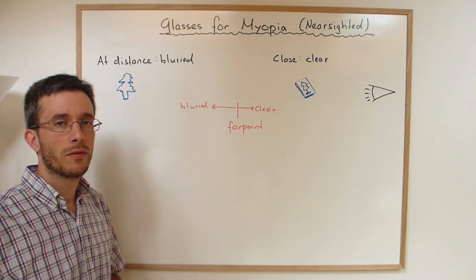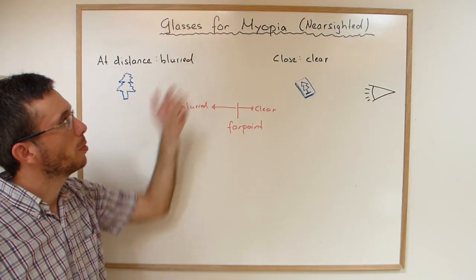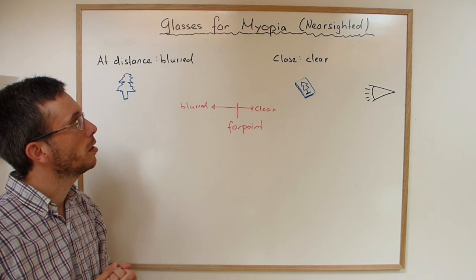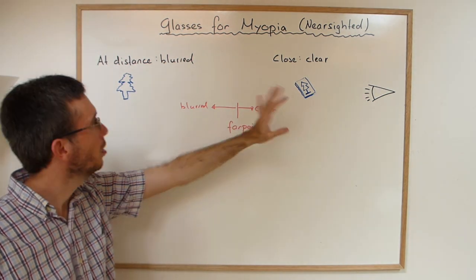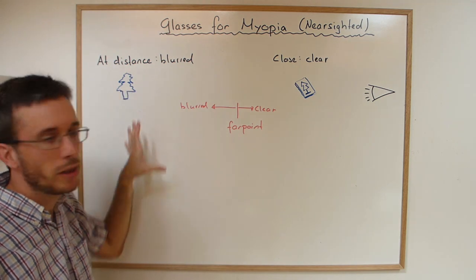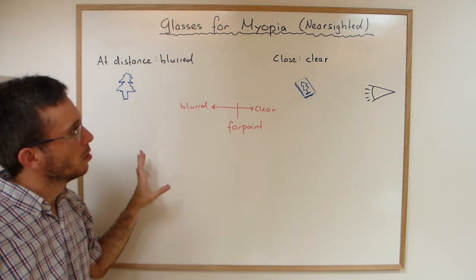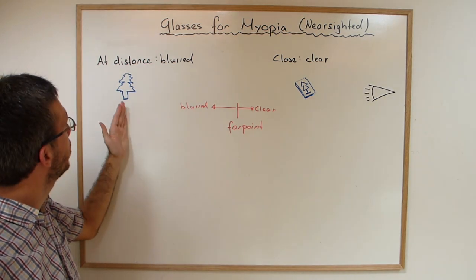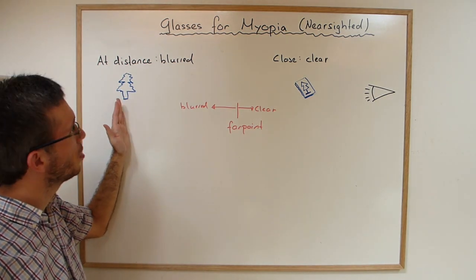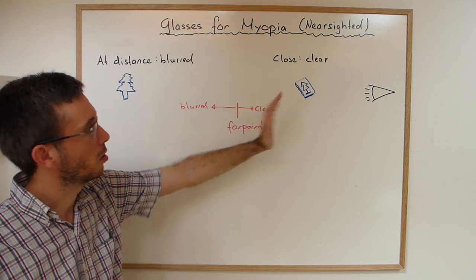How do we calculate glasses for people with myopia? Myopia is when you can see things that are up close very clearly, but things that are very far away are very blurry. The problem is when you have myopia, whatever is far away is blurred, whatever is close you can see.